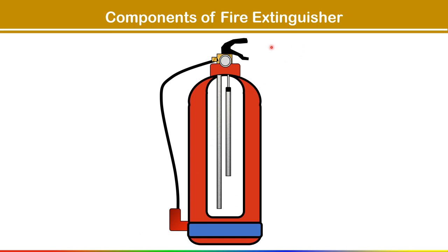The first component is the cylinder, which is a pressure vessel. It is made of steel, containing the extinguishing agent, and it is the main body of the extinguisher.